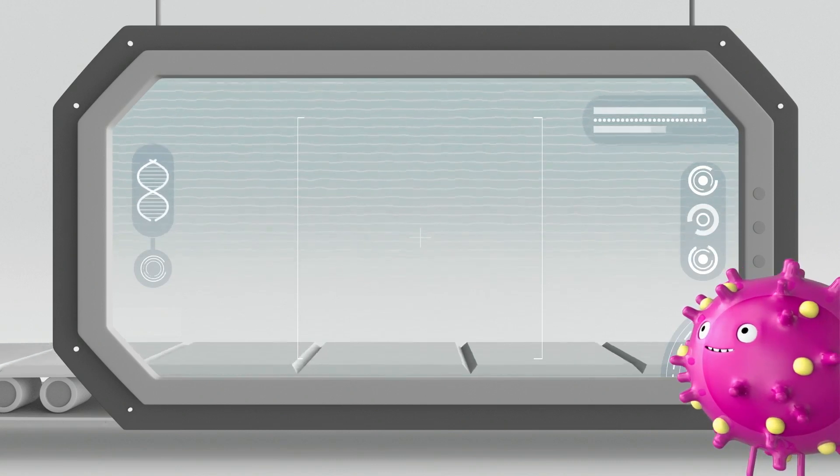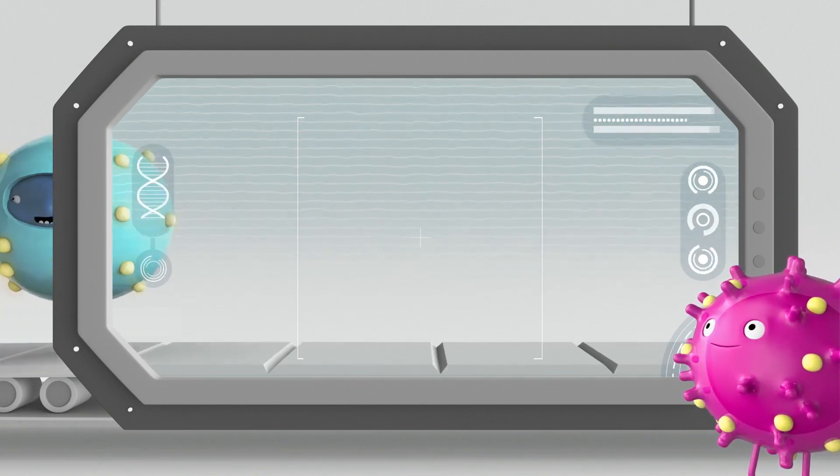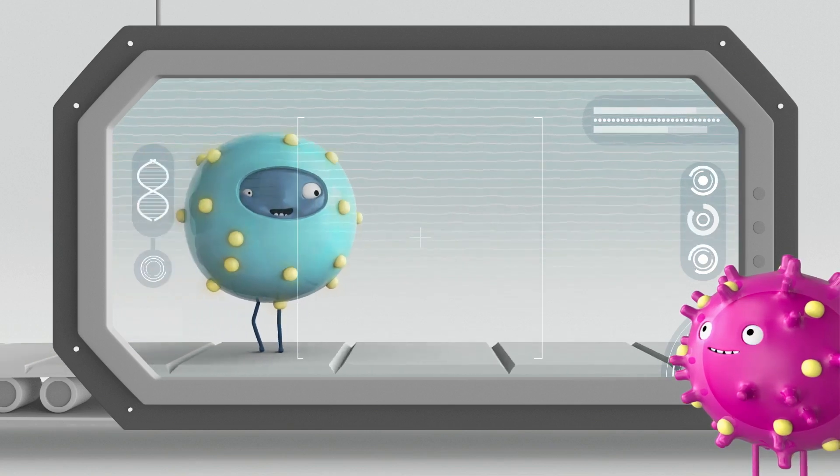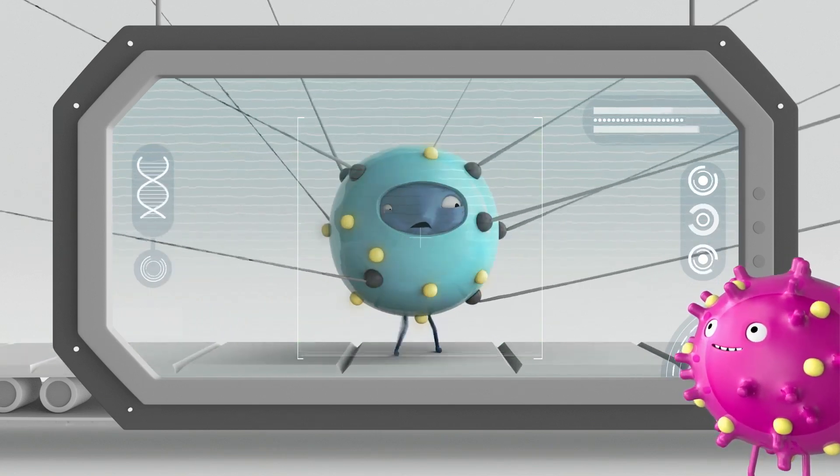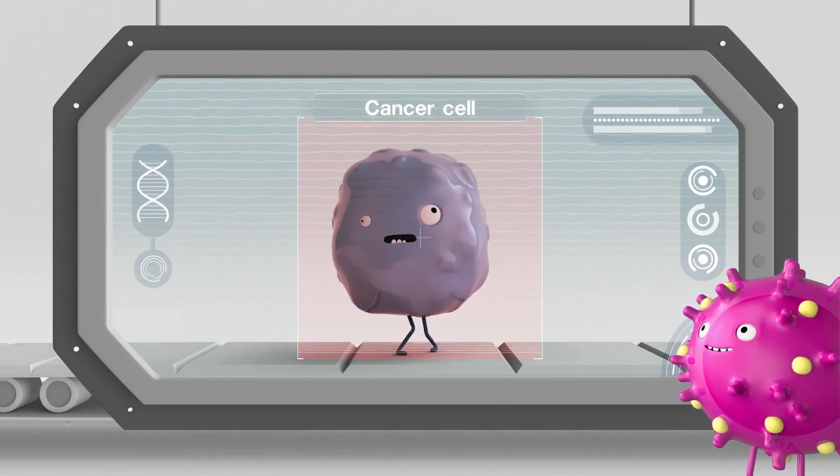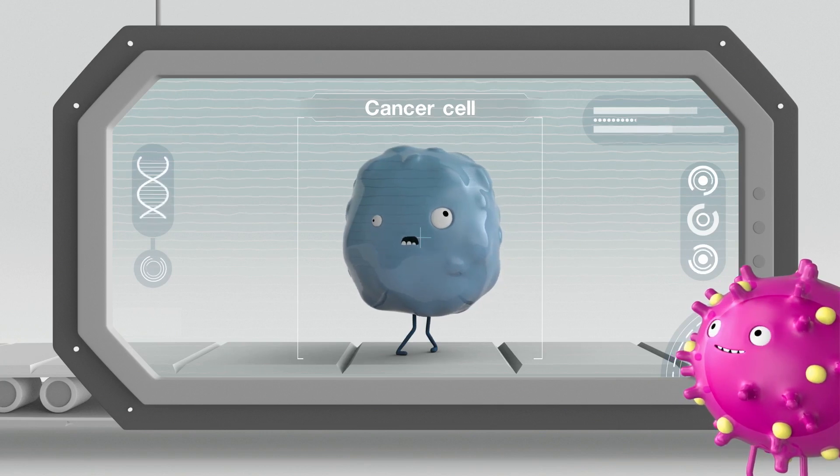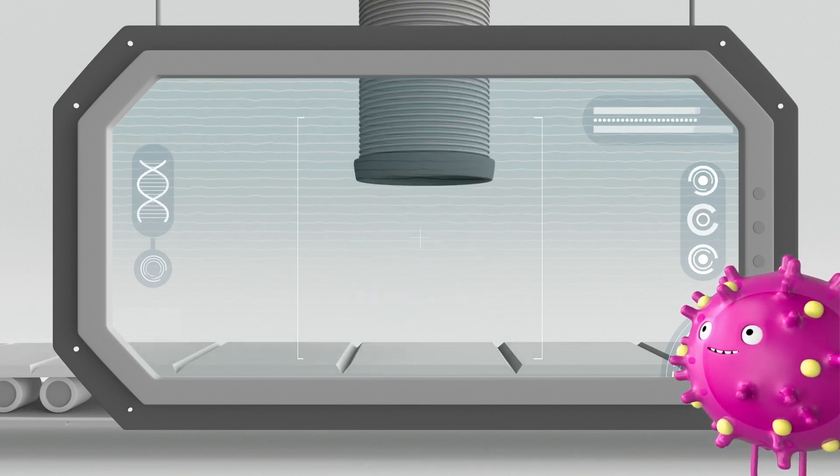There are several types of immunotherapy, and each works a bit differently. One common type works by blocking these checkpoints that allow cancer cells to hide from your immune system. This allows your immune system to work once again without being held back by the checkpoints so that it can detect and destroy these cancer cells.